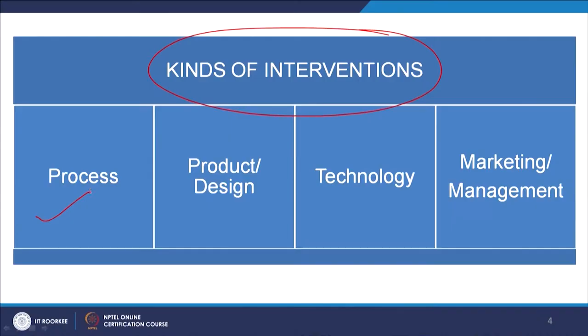There could be a huge list and different ways of intervening, but broadly classifying, I have tried to put four kinds of interventions: process-based, product or design-based, technology interventions, and marketing and management interventions. We did some research already in the previous modules trying to understand the gaps in the craft sector, problems faced by craft persons, and different policy-related issues, and that is where we identified these kinds of interventions are required.